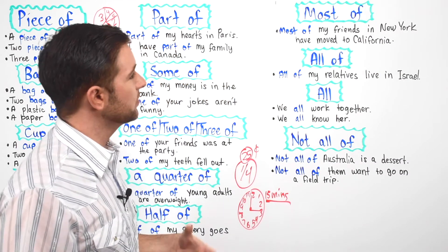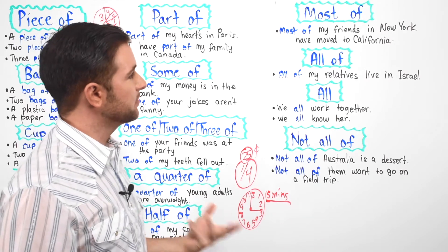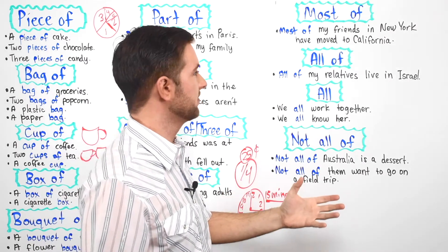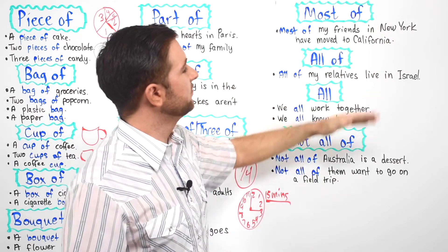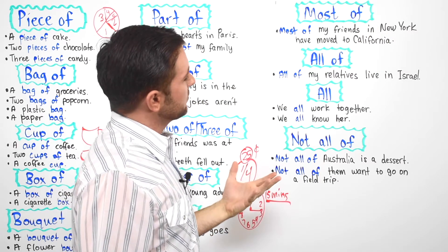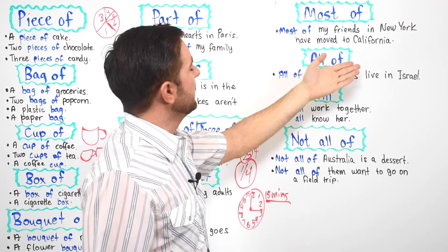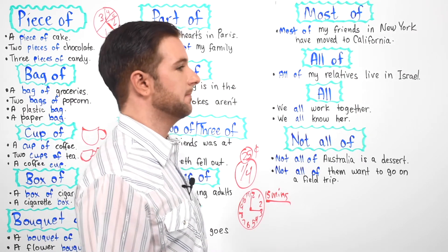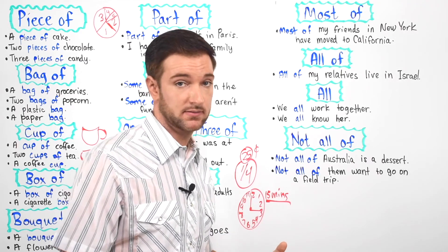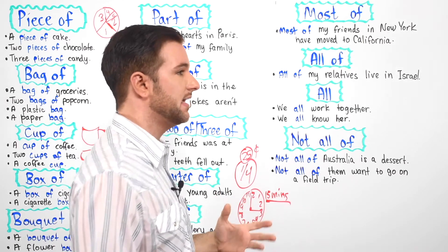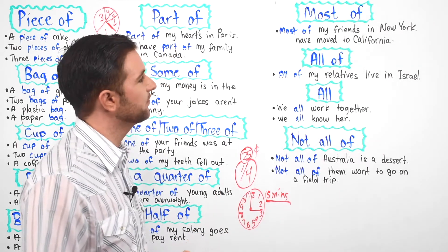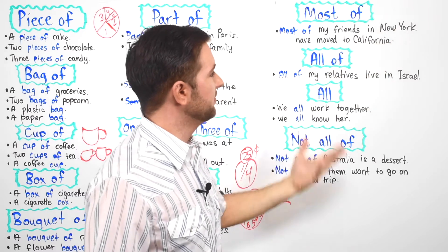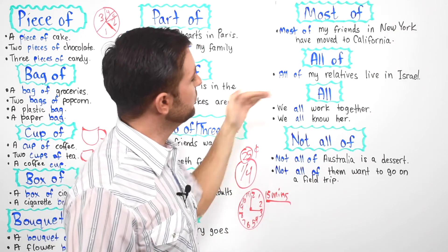Now we have "most of," meaning the majority of — like 70, 80, 90, 95 percent — most of, but not all of it. There's still a little left that's not part of this. Most of my friends in New York have moved to California, so you could say 80% of my friends in New York have moved. You wouldn't say 25%, because we're talking about most of — meaning more than 50%. It could be 60, 70, 80, 90%. Most of my friends in New York have moved to California, meaning they no longer live in New York.